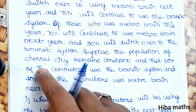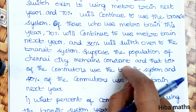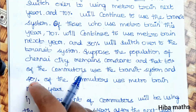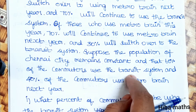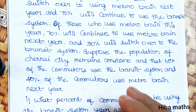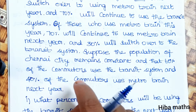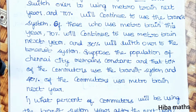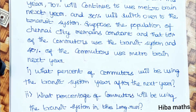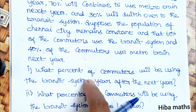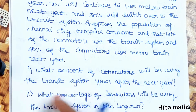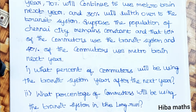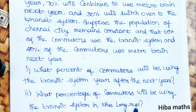Suppose the population of Chennai remains constant and that 60% of commuters use the transit system and 40% use the metro train. We need to find: in the long run, what percentage of commuters will be using the transit system?